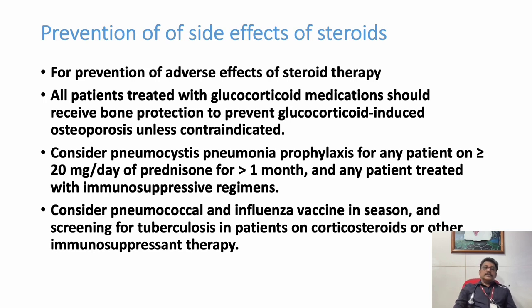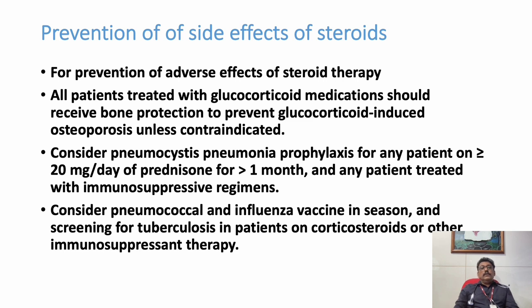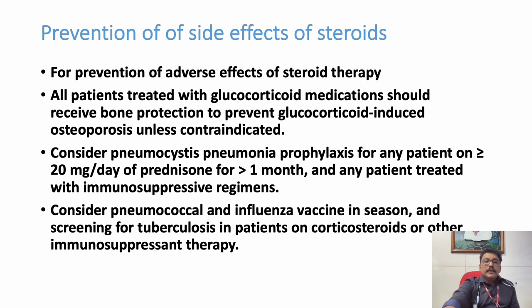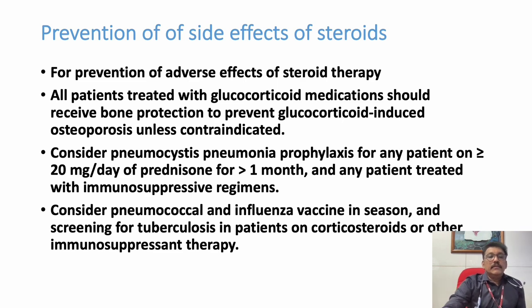Another important problem is infections. Whenever a patient is on chronic steroids, they have a propensity for repeated infections. Whenever infection is suspected, immediate treatment is required. PCP prophylaxis is also very important — similar to other immunosuppressive regimes or HIV, where the patient's immunity is very low, we have to consider PCP pneumonia prophylaxis. You can give Bactrim DS one tablet daily to prevent PCP pneumonia. Other vaccines are also very important — influenza, H. influenzae, pneumococcal — all vaccines are very, very important.